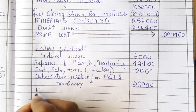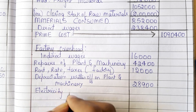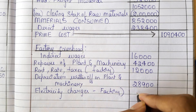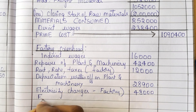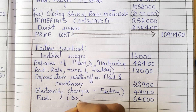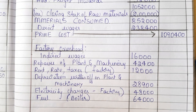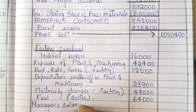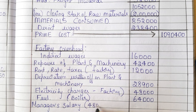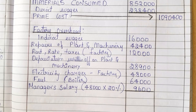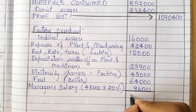Next, we have electricity charges of 48,000. Then we have fuel for the boiler, which is 64,000. Of course, the boiler is kept in the factory itself. Next, we have the manager's salary. They have told us to divide it in the ratio of 20:80. So for the factory, it is 20% of 48,000, which gives us 9,600.